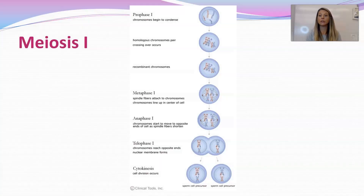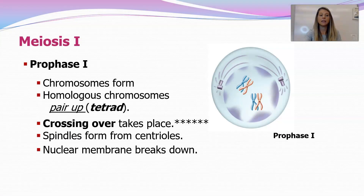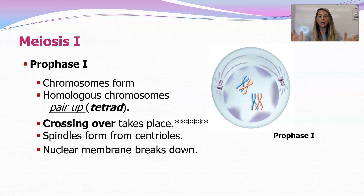Now we get into the first division of meiosis — meiosis I. Within meiosis I there is a PMAT: prophase I, metaphase I, anaphase I, and telophase I. In prophase I, some very unique things happen. This is a huge stage — highlight this, star it, bold it, whatever you need to do to signify the importance of prophase I. This is where all the big stuff happens.